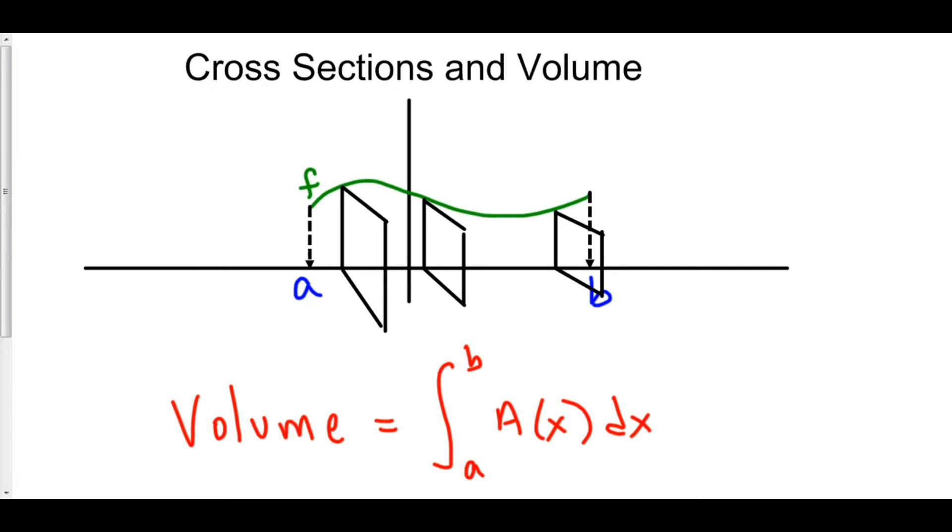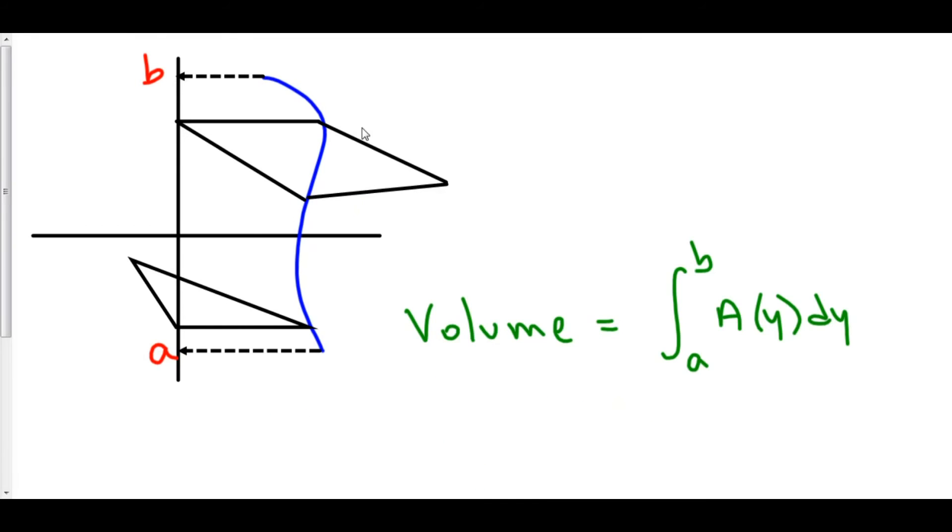Now, what happens if you want to have cross sections that are perpendicular to the y-axis? Well, if you want to have cross sections perpendicular to the y-axis, then you have to do everything in terms of y. So, we're going to integrate from y equals a to y equals b, and we also have to create our functions in terms of y.